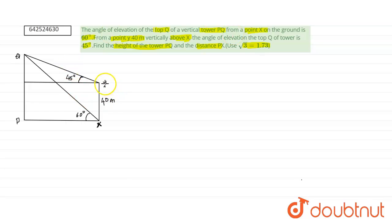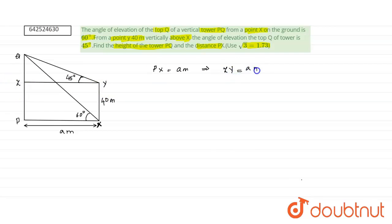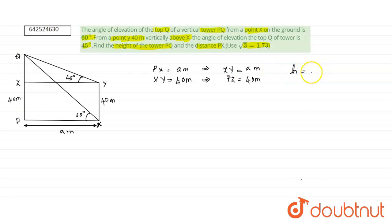YX is 40 meters. Let us take PX to be a meters. If PX equals a meters, we also get this distance — let us take this point to be Z — so ZY equals a meters. Since XY equals 40 meters, that implies PZ equals 40 meters. Now let us take the height of the tower to be h meters. So QP equals h meters. If ZP is 40 and the total QP is h, we also get QZ equals h minus 40.